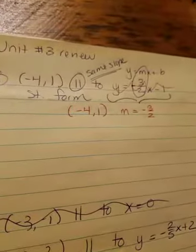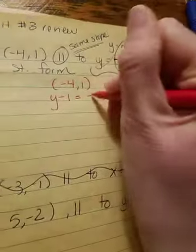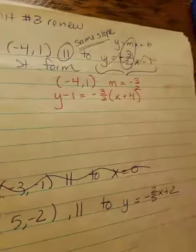And so, if they want it in standard form, in class, remember we suggested you put these in point slope first. So, it's going to be y minus 1 equals your slope, parenthesis x minus a negative 4, so x plus 4.